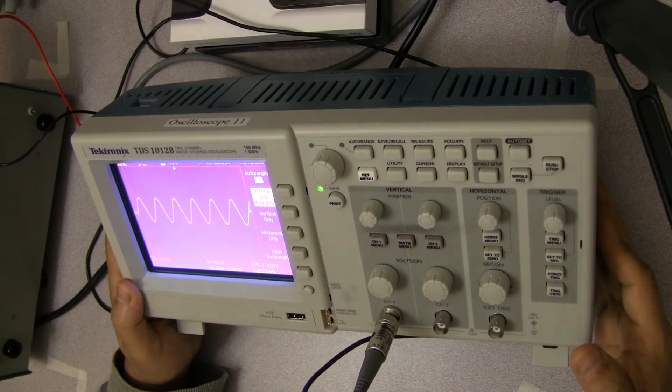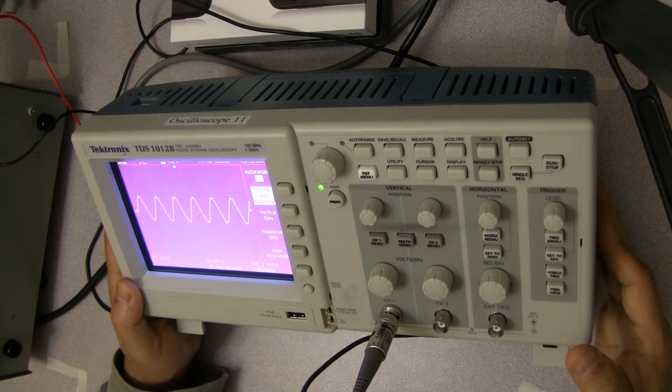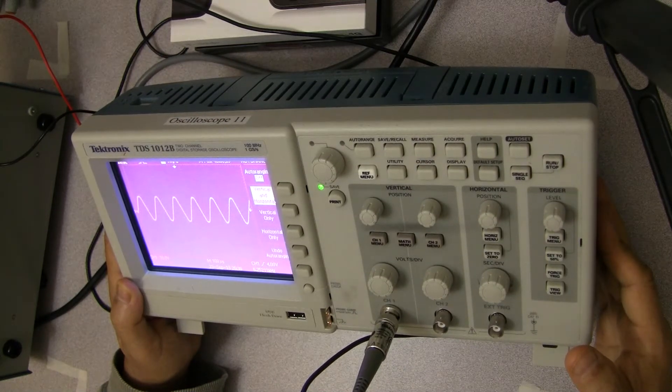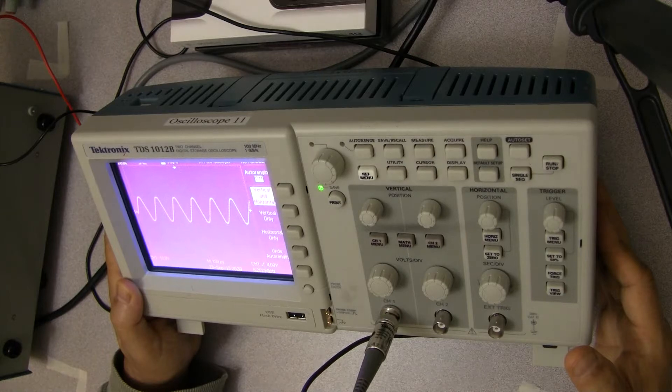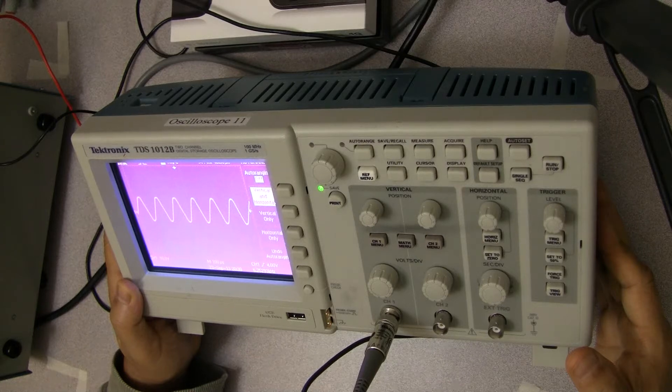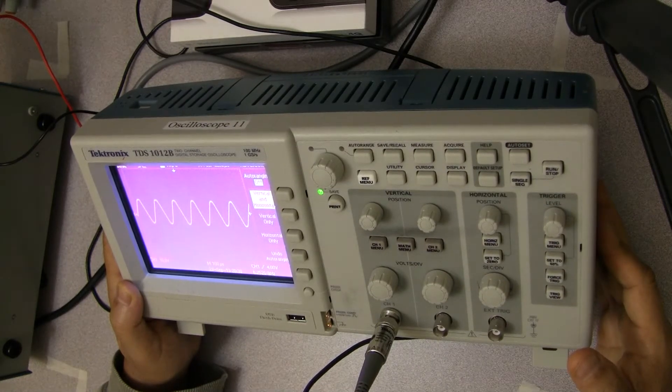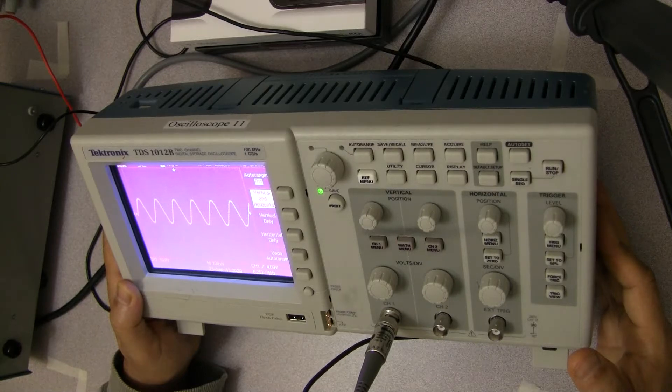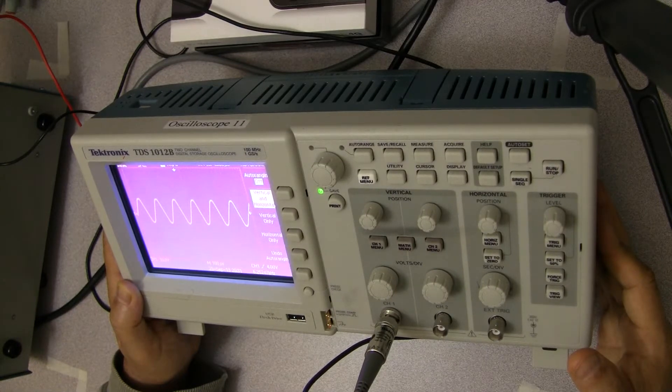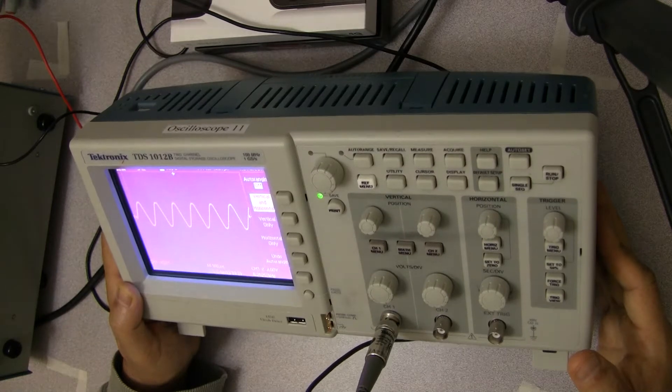You can think of an oscilloscope as a voltmeter that allows you to continuously look at the signal as it's coming through. The way it does it, it tries to catch the signal at the same point. If you've got a periodic signal that repeats itself, it's going to repaint the same signal so it's going to look really clean to you.